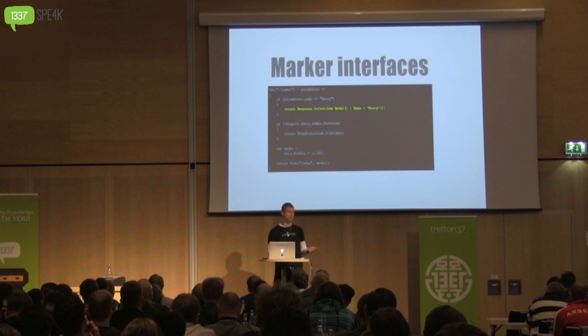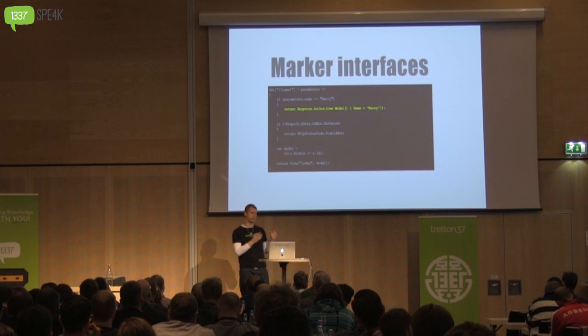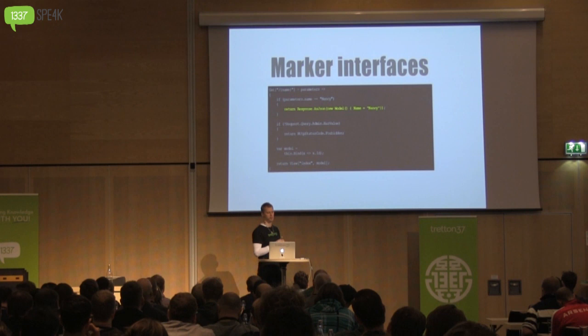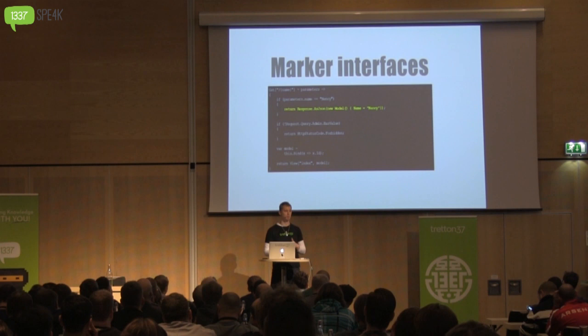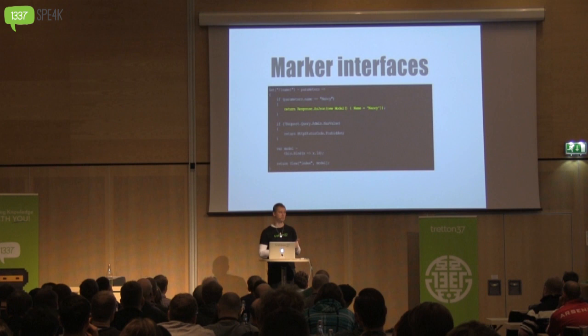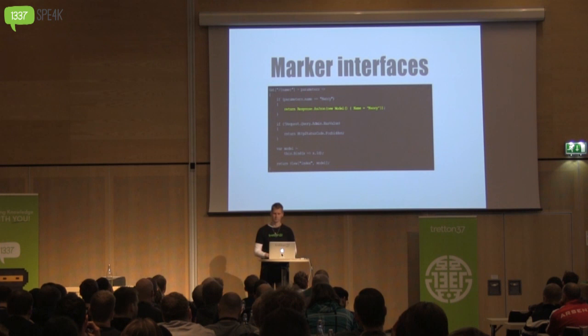We've solved our discoverability problem and helped third-party developers surface their material as well. But this also has a nice side effect: it increases the readability of our code. If we take the marker interface with a name that makes sense in context and put it behind a property with a context-specific name — in this case, a property called response — the code actually reads out as return a response as JSON. Just by following a simple naming convention on our extension methods, the intent of the code is very obvious. So we get three nice benefits from basically just an empty interface.